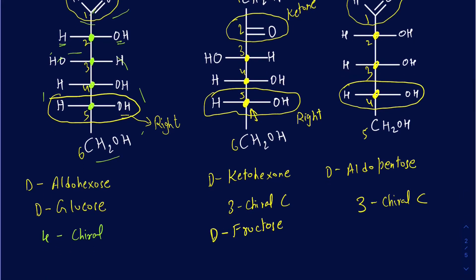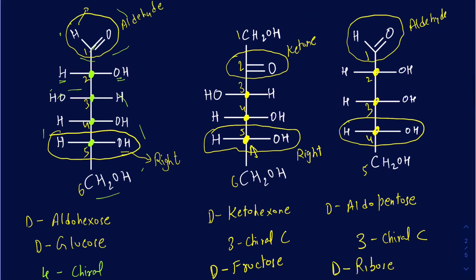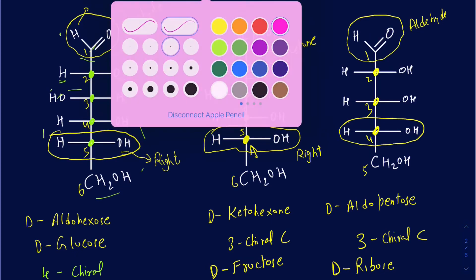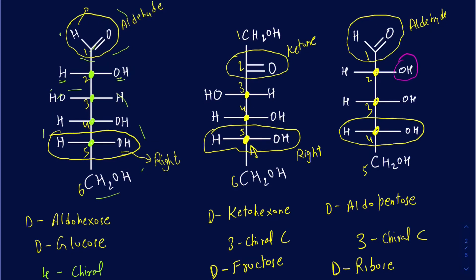The common name for this particular sugar is ribose — D-ribose. You may be familiar with RNA and DNA. In RNA, you have ribonucleic acid, and the sugar contained in RNA is this ribose sugar. When we talk about DNA, it's deoxyribose. The difference between ribose and deoxyribose is the absence of one OH group — if you lose that OH and replace it with H, then it's going to be called deoxyribose. That's the only difference between the sugar molecules contained in RNA and DNA.